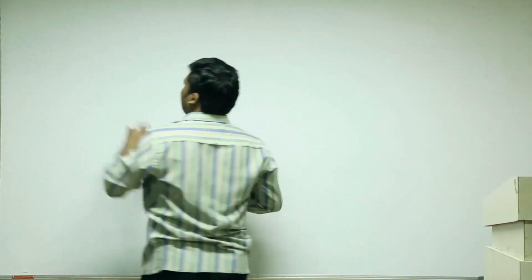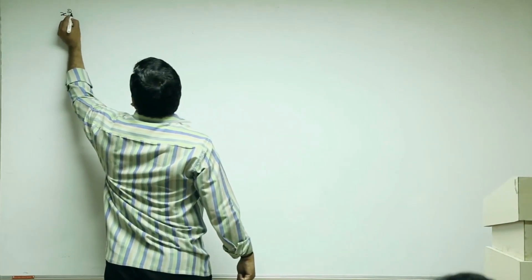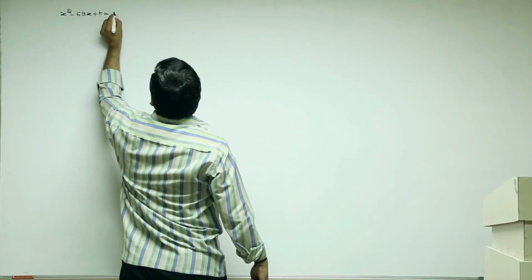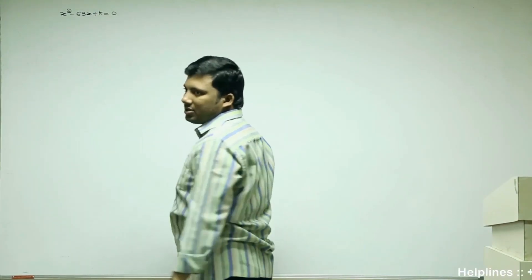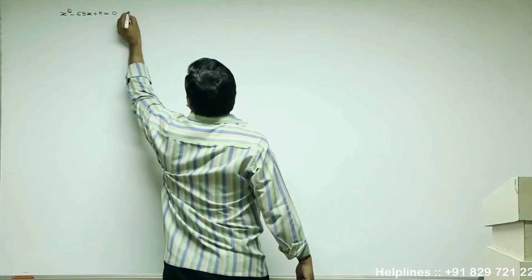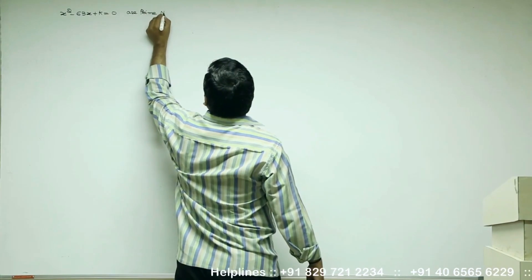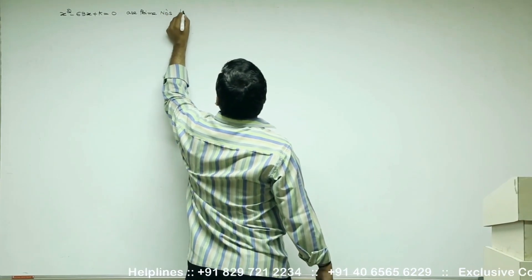x square minus 63x plus k equal to 0. Both roots of this equation are prime numbers. Find k.